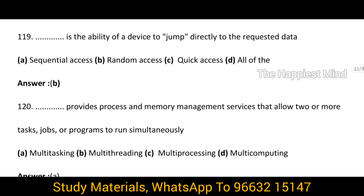Question 119: What is the ability of a device to jump directly to the requested data? It is option B — random access.